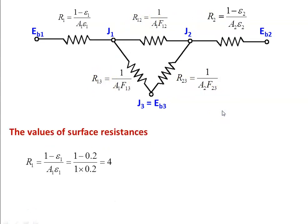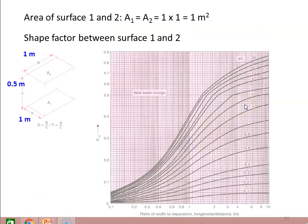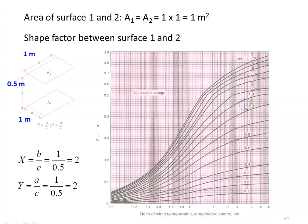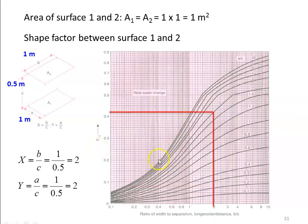The surface resistance R1 equals (1 minus epsilon1) divided by (A1 times epsilon1), which is (1 minus 0.2) divided by (1 times 0.2) equal to 4. R2 equals (1 minus 0.5) divided by (1 times 0.5) equal to 1. To calculate the shape factor between surface 1 and 2: the plate is 1 meter by 1 meter, with height 0.5 meter. X equals B/C = 1/0.5 = 2, and Y equals A/C = 1/0.5 = 2. For X = 2 and Y = 2, the shape factor F12 equals 0.41525.